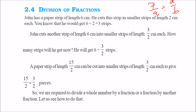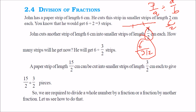Let us take an example. John has a paper strip of length 6 cm. He cuts this strip into smaller strips of length 2 each. How many strips does he have now? 6 divided by 2. Now he does one more thing: John cuts another strip of length 6 cm into smaller strips of length 3 by 2 cm — we know that 3 by 2 is nothing but 1.5. So how do we get this? 6 divided by 3 by 2 will be the number of strips.